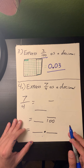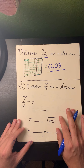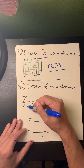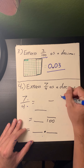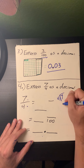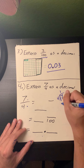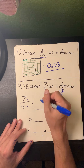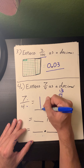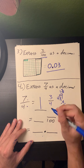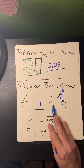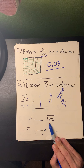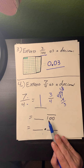Problem number four: express seven-fourths as a decimal. Seven-fourths is an improper fraction — the numerator is larger than the denominator. To convert to a mixed number, I divide my numerator by my denominator. Four goes into seven one time; seven minus four equals three. So seven-fourths equals the mixed number 1 and 3 fourths. Four cannot multiply to reach 10 — multiples of four are 4, 8, 12 — so the equivalent denominator would be 100.